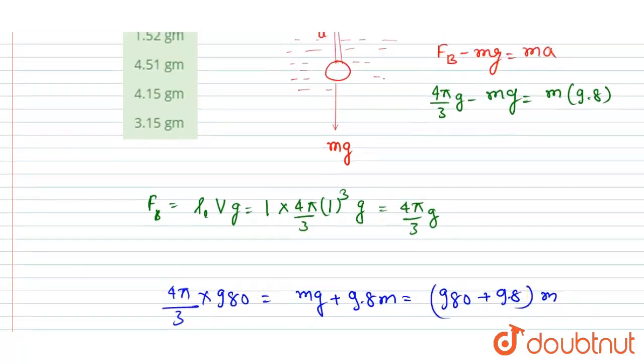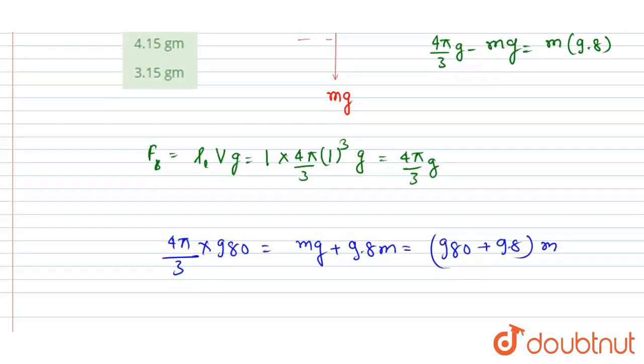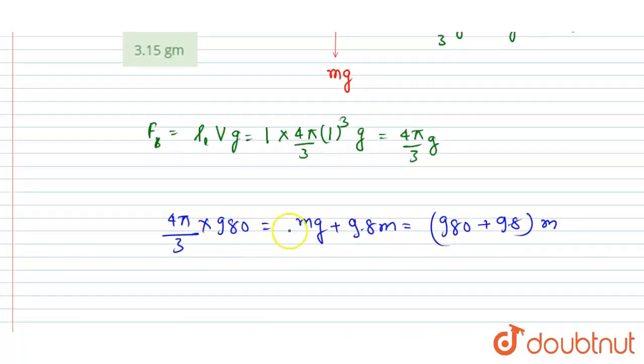Now g is 980 again, so 980 plus 9.8. If you add the two, you will get... yeah, you can see the gravitational acceleration in this, so you can add the two and divide the addition from this expression on the left.